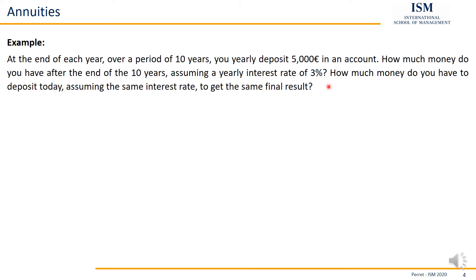Then, this was the first part, how much money do I have after the 10 years? The second part, how much money would I have to deposit today, assuming the same framing conditions, to get the same result? So assuming I want to have a one-off payment today, what do I need to invest today?